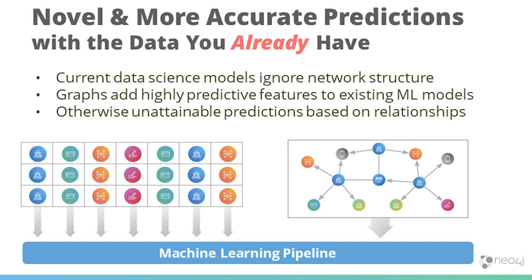The bottom line across all eight examples is the same concept: making new and better predictions with data you already have. We're putting that data into a graph shape and getting more information out of it. Your typical tabular data science model has rows and columns, and you're either ignoring network structure and relationships, or going to a lot of effort to pull those out — like having a column for 'how many friends does this person have.' When your data is in a graph, it's much simpler.